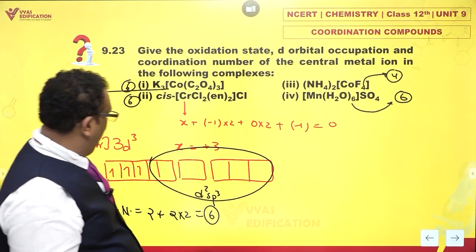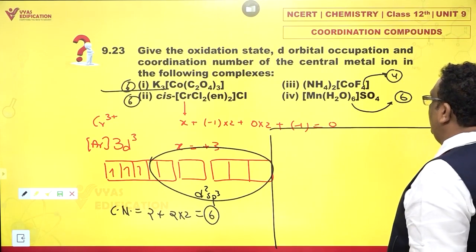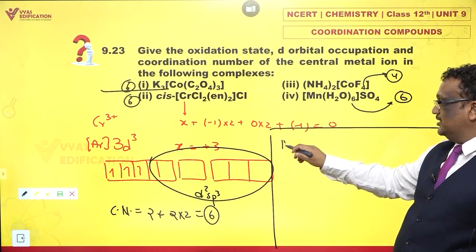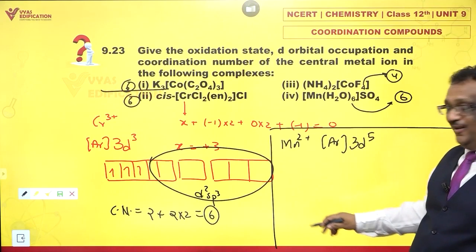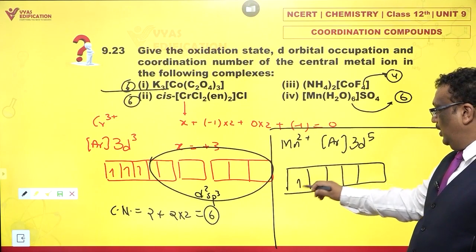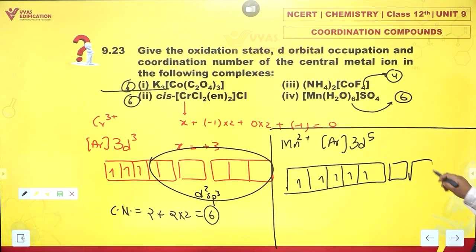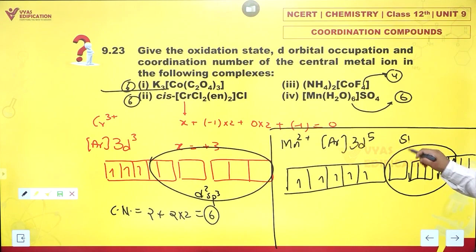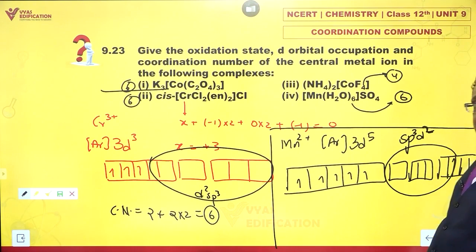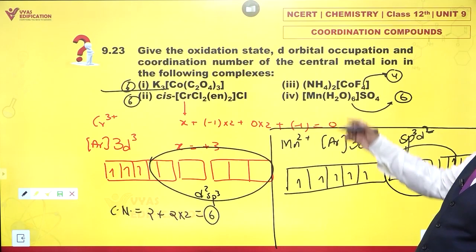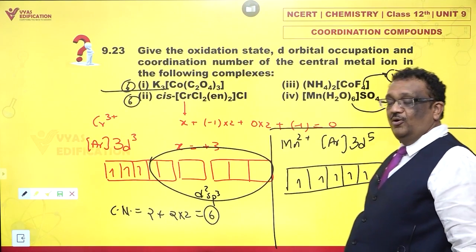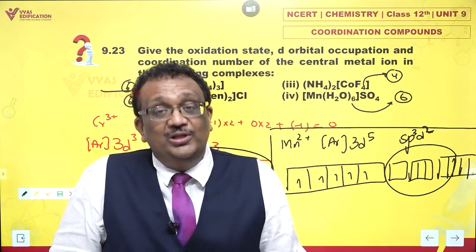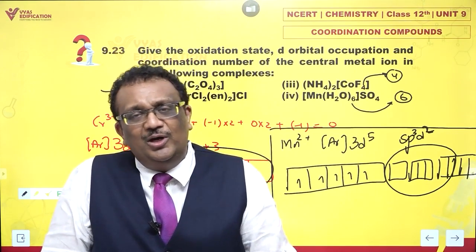For Mn(H2O)6²⁺: this is manganese(II), [Ar]3d5. Drawing the box diagram: one, two, three, four, five. The hybridization is sp3d2 - it is obviously a high spin complex since water is a weak field ligand. Coordination number is six. The d5 configuration, orbital occupation, coordination number, and hybridization have all been covered for these complexes.